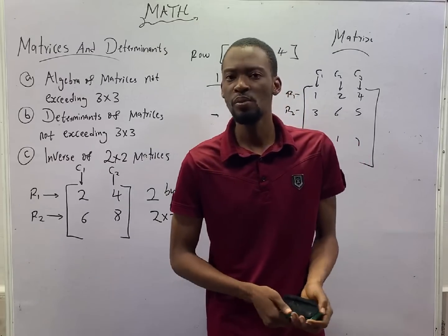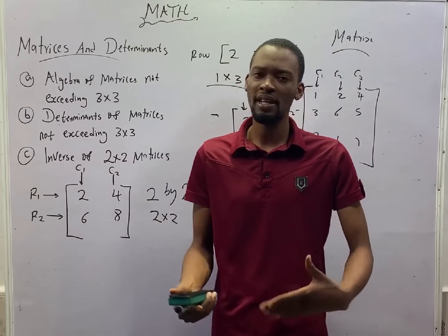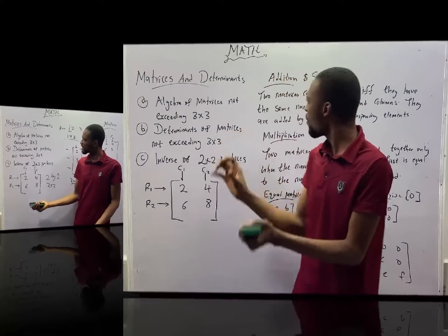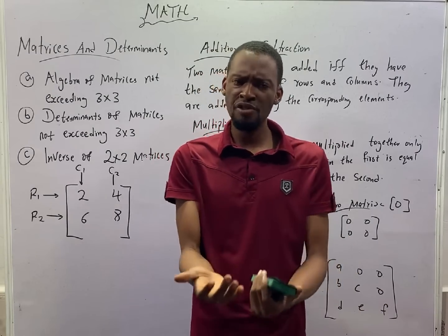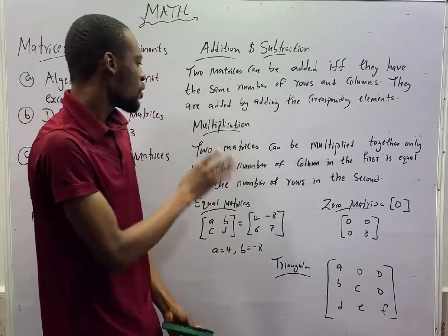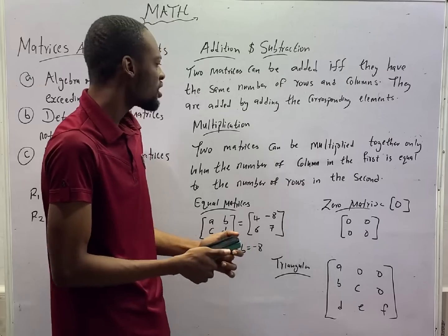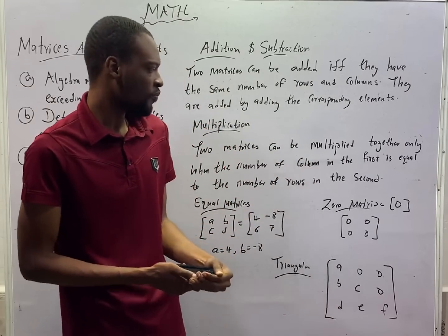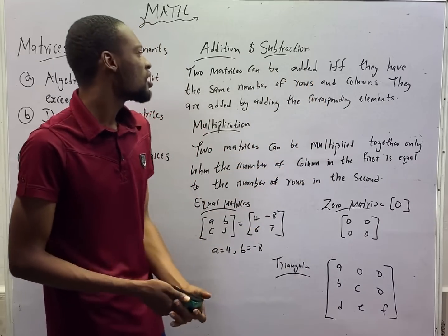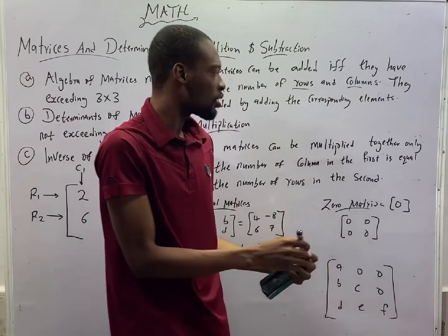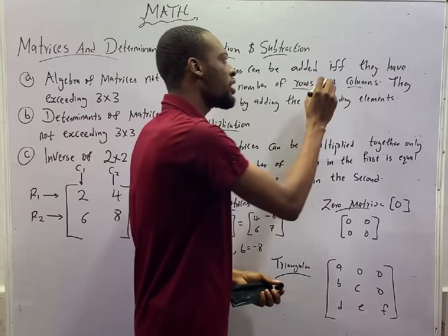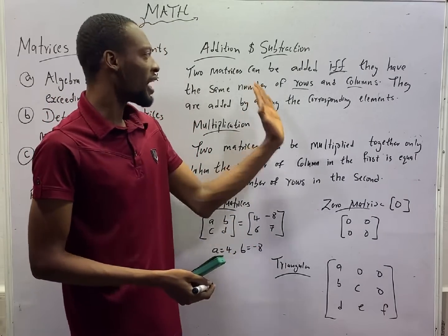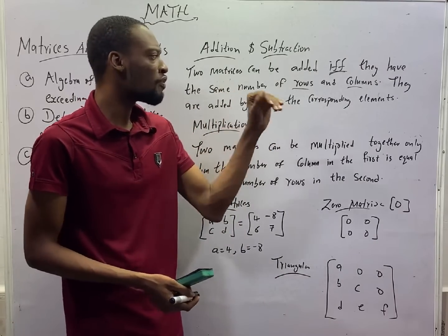This is everything JAMB expects you to know under matrices and determinants. Before the end of episode 56, we will be familiar with all these topics. Matrices can be added and subtracted. Matrices can also be multiplied, but multiplication of matrices is not commutative. However, it is associative, and matrix multiplication is distributive over addition and subtraction. To add or subtract matrices, they must have the same number of rows and columns — two matrices can be added or subtracted if and only if they have the same number of rows and columns.